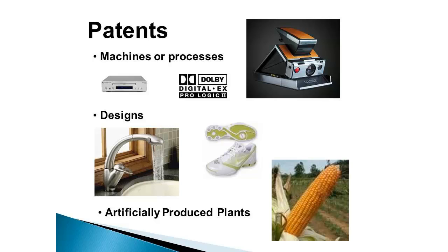If you get a patent, it protects you for 17 years, or 14 years in the case of a design. Once you have a patent, you have full control over what the invention is used for — you can manufacture it, license it to others, or choose to do nothing with it. There was always a rumor about someone who invented a magic carburetor that could get any car 100 miles to the gallon, but the story was that he got the patent and the car and oil companies paid him not to produce it. I don't think that was true, but it does illustrate that you can hold a patent and do nothing with it.